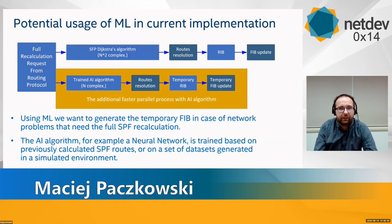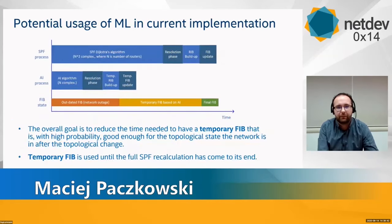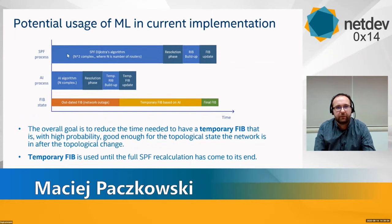The neural network is trained based on previously calculated SPF routes and may be retrained adaptively while the network is operating. The dataset of the AI algorithm is trained with per-router data that can be easily obtained in a simulation for every network. On this slide we have a forwarding information base state chart with the SPF Dijkstra-based process and the AI-based process. Please notice that the chart is not to scale. However, the AI process part will always be less than the SPF algorithm part. When you look at the FIB state, you can notice three different colors.